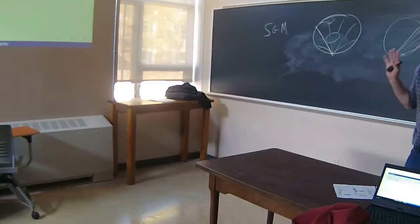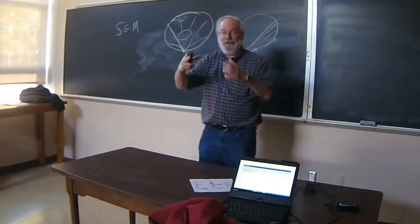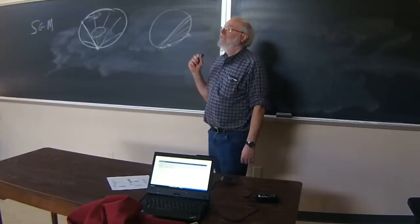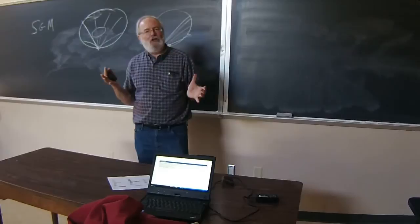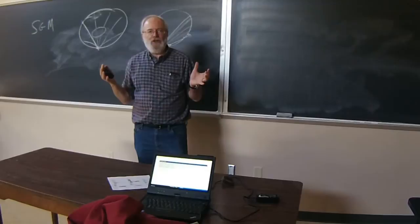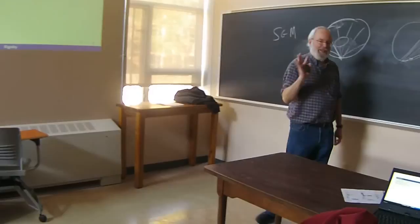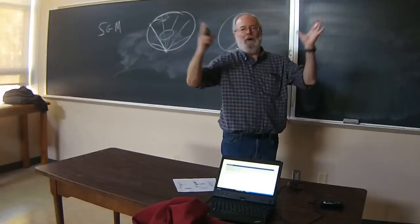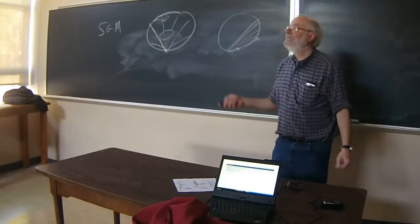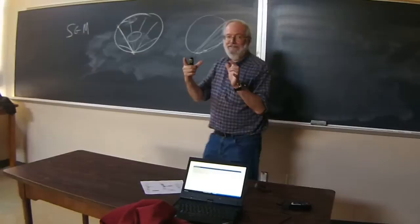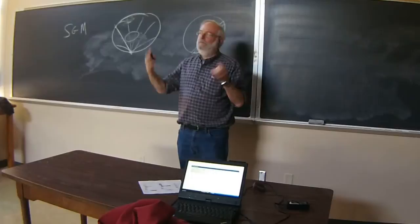Three dimensions is important for applications like human skulls or the Earth, but we don't know. Even whether scattering implies lens for the flat three-ball is not answered — it's an open question. It is unknown even if flat balls in dimension larger than two are scattering rigid. Flat balls are boundary rigid — that was Gromov — but we don't know if they're scattering rigid.